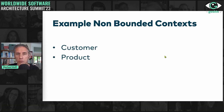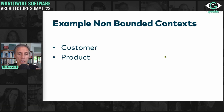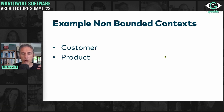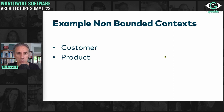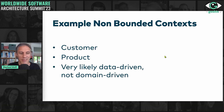The same is true for products: you write an invoice for a product, check whether a product was delivered, figure out how to deliver a product, and people order products. We could build a module called product, but it's just going to be used all over the place and become a hotspot for changes. That's data-driven, not domain-driven.